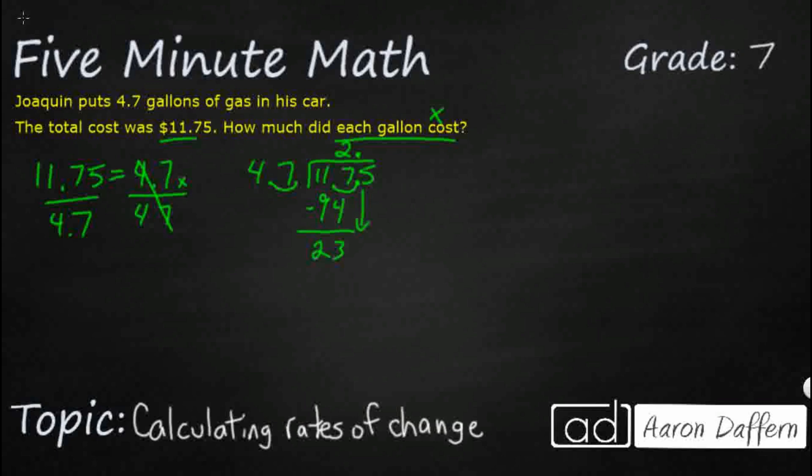Now we need to bring this down, 235. Well, I'm going to estimate 4 or 5. Let's try 5 because I know 5 times 7 is going to get me something that ends with a 5. So that's good. 35. Look at that. It goes in perfectly even.